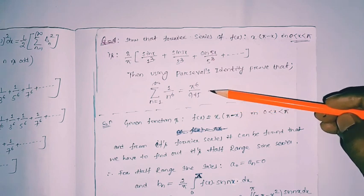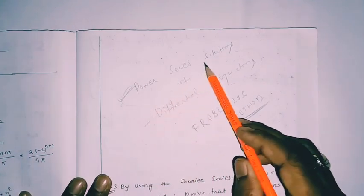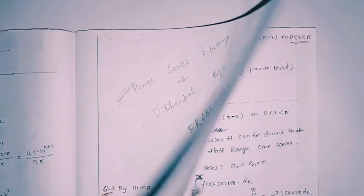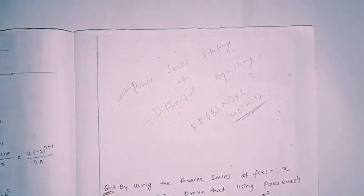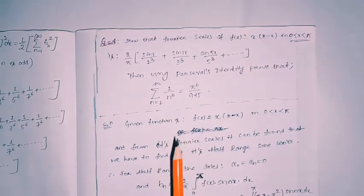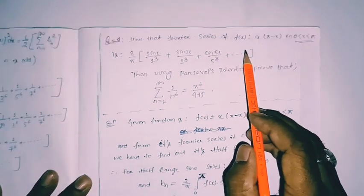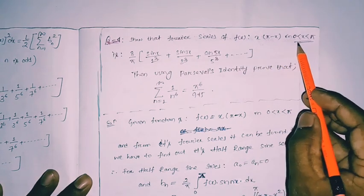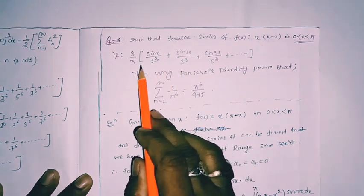From the next class onwards we are going to start the power series solution of differential equations using Frobenius's method. In this class we discuss this important question. The given function is x(π - x) on [0, π], and the series we have to find is already indicated in the question.